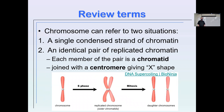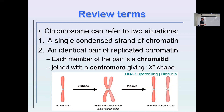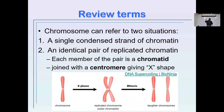The term 'chromosome' confusingly can refer to two things. It can be a single strand of DNA condensed down into chromatin — a single copy of the genetic information living in the cell. We also refer to a chromosome when that chromosome has been replicated and forms an X shape, because there are now two copies joined together.